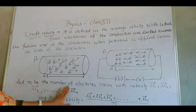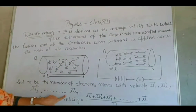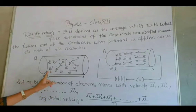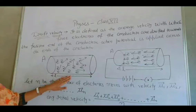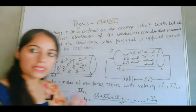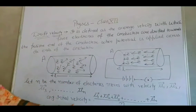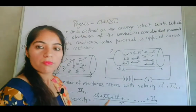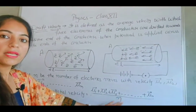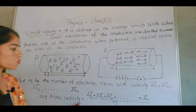Let n be the number of electrons moving with velocities u1, u2, u3, so on up to un. These are the initial velocities of the electrons. So the average initial velocity is: u1 plus u2 plus u3, so on up to un, divided by n. This is the average initial velocity of the electrons.